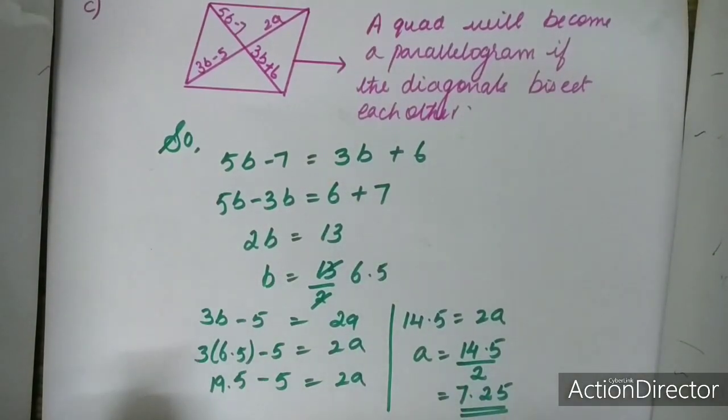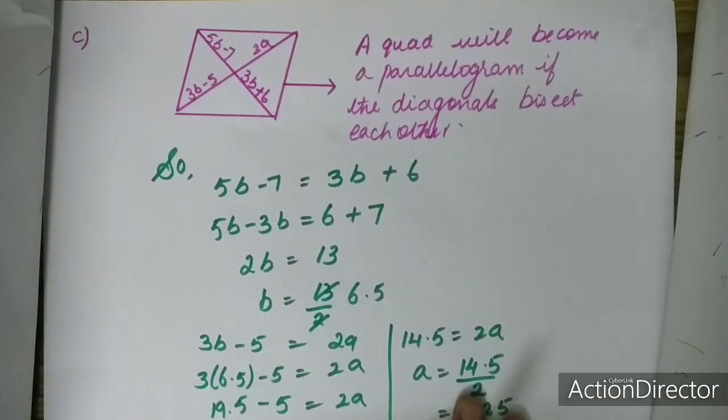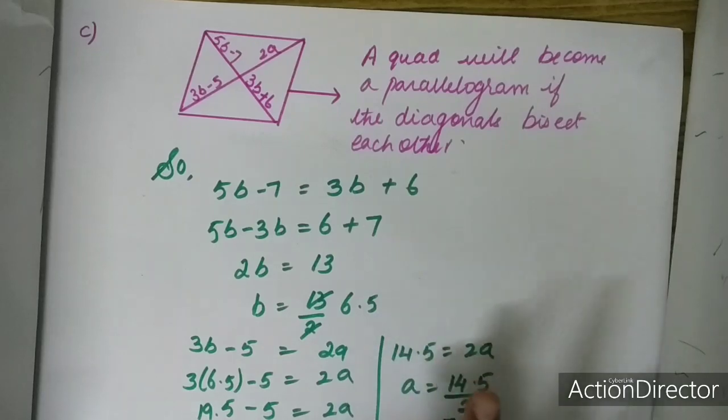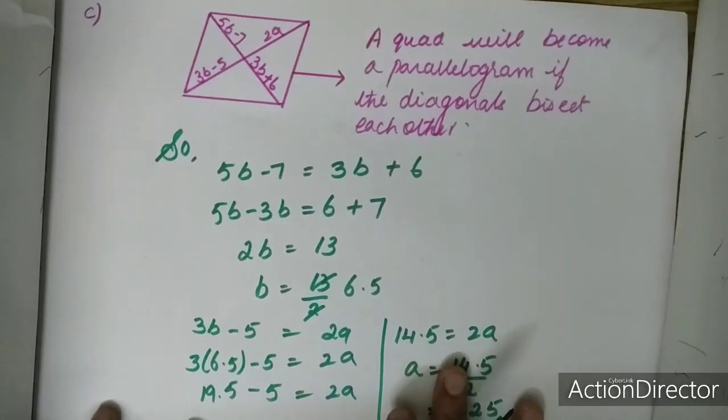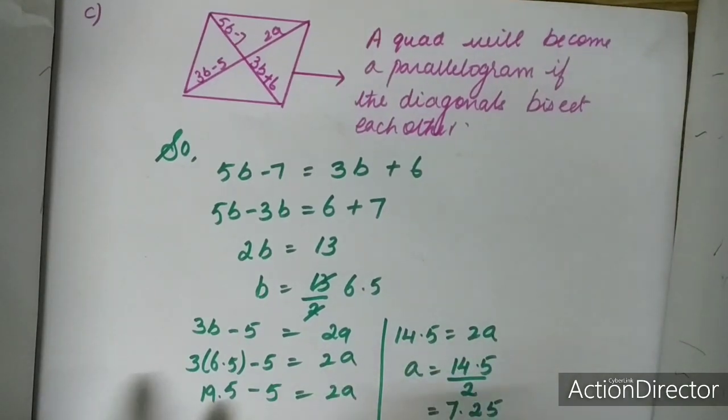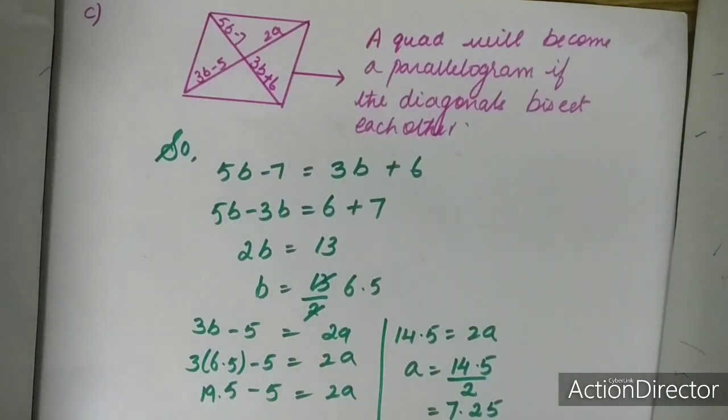So in this way, by using the different properties of a parallelogram, we can find the values of A and B.